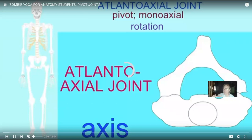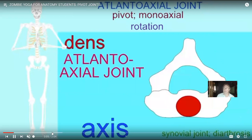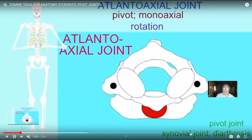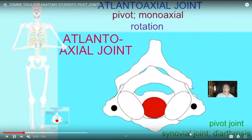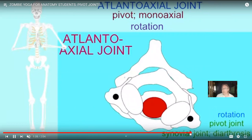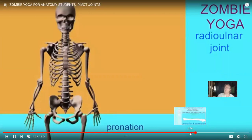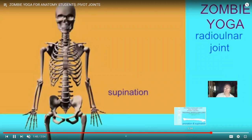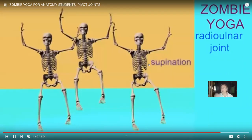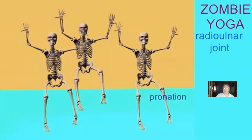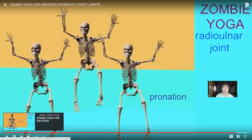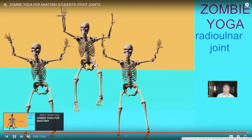There are two pivot joints in the body — where we have a round structure in a ring which allows it to rotate. The best example is between the atlas and axis, which allows us to shake our heads no. The radial notch of the ulna — this proximal radioulnar joint — allows for pronation where the palms face posteriorly, and supination, which is how the arm is oriented in anatomical position. Those are monoaxial joints which allow movement in one plane.